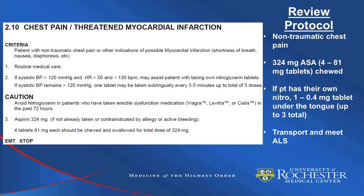In review, the MELREMS protocol for chest pain or threatened myocardial infarction is for use in patients with non-traumatic chest pain or other indications of possible MI, including shortness of breath, nausea, diaphoresis, etc. These patients should receive routine medical care, and if systolic blood pressure is above 120 mmHg and heart rate is between 50 and 130 beats per minute, BLS providers may assist with taking the patient's own prescribed nitroglycerin tablets every three to five minutes, up to a total of three doses. Nitroglycerin should be avoided in patients who have taken erectile dysfunction medications such as Viagra, Levitra, or Cialis in the past 72 hours.